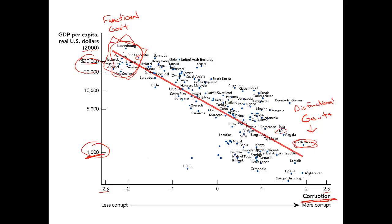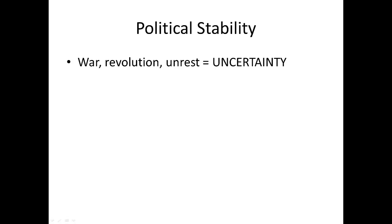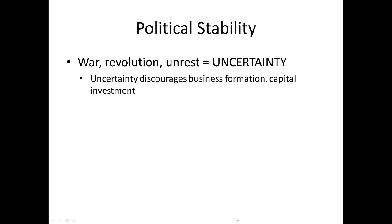You want to have a functional government, and the main function is to secure property. Another aspect of this is you want political stability. An unstable political environment creates uncertainty as to your ability, as an entrepreneur and resource owner, to profit over the long run from investing in capital. If you're uncertain whether a different regime might take over and expropriate the capitalists, are you going to make an investment in a factory or an oil refinery? Are you going to improve your land? Are you going to make an investment that pays off over a 10, 20, or 50-year span?